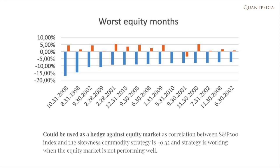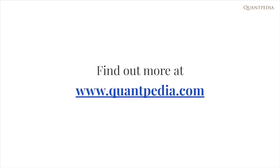To sum it up, the lottery anomaly in commodities is alive and performs in a desirable way also in this recent period. Moreover, the profitable strategy based on this anomaly could also serve as a hedge for equities, and it offers a profitability possibility to invest during times when equities are in bear markets. Thank you for your attention and do not forget to visit our website quantipedia.com for more trading strategies and investment analysis.